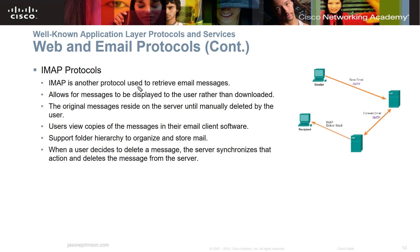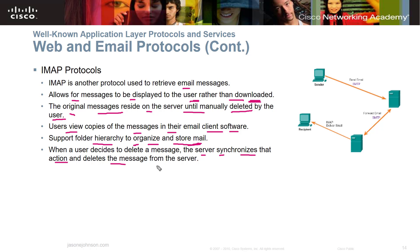IMAP is another email protocol that allows messages to be displayed to the user rather than downloaded — you're actually viewing them on the server, similar to how Gmail works in a browser. The original message resides on the server until it's manually deleted by the user. Users view copies of messages in their email client software, with folder hierarchy support for organizing email. When a user deletes a message, the server synchronizes that action and deletes the message from the server.